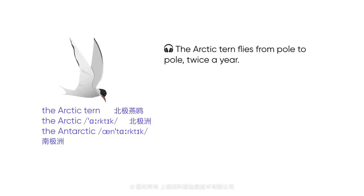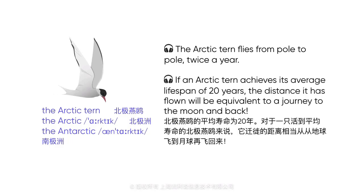The species of bird with the longest migration is the Arctic tern. They spend their years between the Arctic and Antarctic, which are the north and south poles. The Arctic tern flies from pole to pole twice a year. To make their journey, Arctic terns can fly more than 49,700 miles in a year. If an Arctic tern achieves its average lifespan of 20 years, the distance it has flown will be equivalent to a journey to the moon and back.